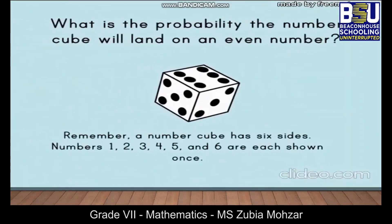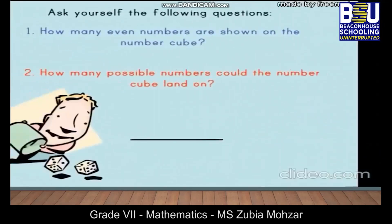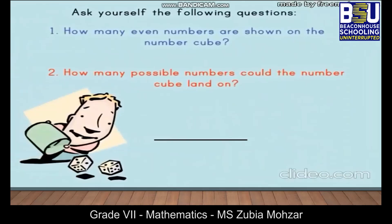What is the probability the number cube will land on an even number? Remember, a number cube has six sides. Ask yourself: how many even numbers are shown on the number cube? Well, three numbers — two, four, and six.